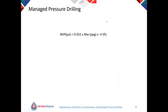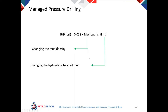To change bottom hole pressure we have three options: change mud weight (not practical to do repeatedly), change the hydrostatic head of mud (sometimes doable, sometimes not), or add back pressure and manipulate it to affect bottom hole pressure. The focus of this presentation is on changing the hydrostatic head of mud using the Controlled Mud Level (CML) system.